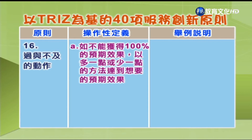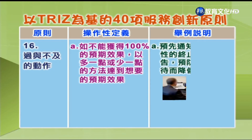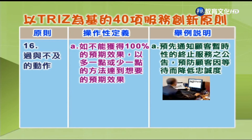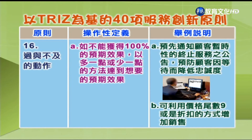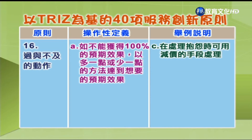第16项「过于不及的动作」：如不能获得100%的预期效果，以多一点或少一点的方法达到想要的预期效果。举例：A.预先通知顾客暂时性的终止服务之公告，预防顾客因等待而降低忠诚度；B.利用价格尾数或折扣的方式增加销售；C.在处理抱怨时可用减价的手段处理。